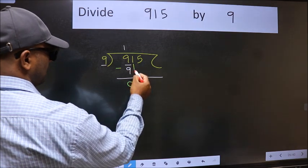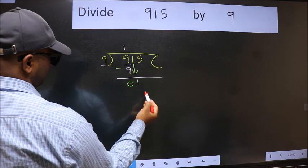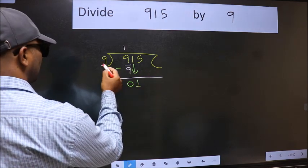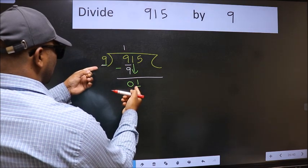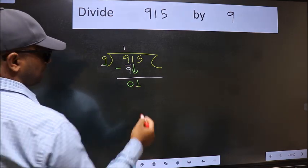After this, bring down the beside number. 1 down. Now here we have 1 and here 9. 1 is smaller than 9. So we should bring down the second number.